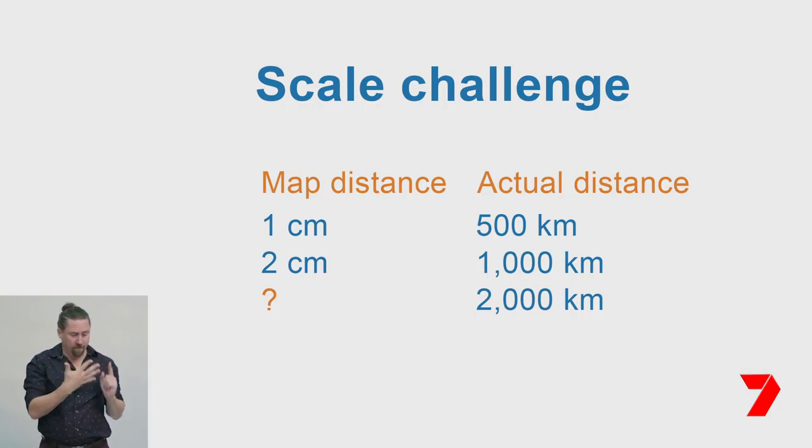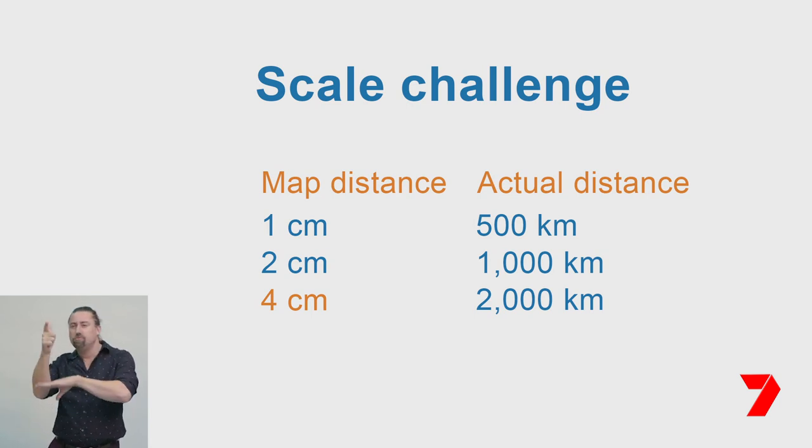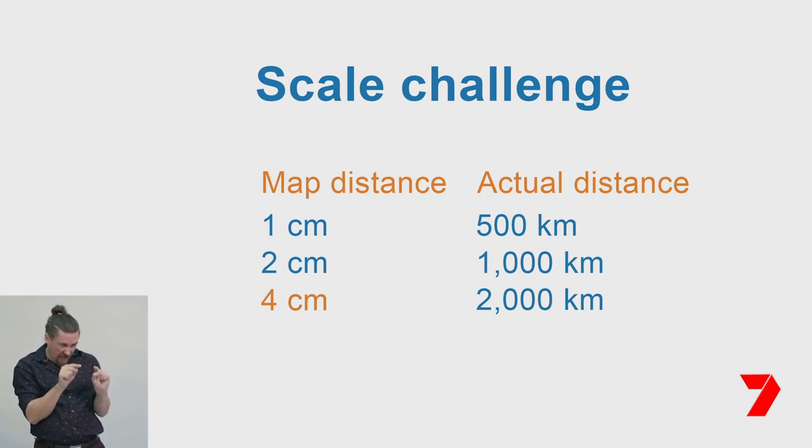Let's try using a different scale to practice our navigation skills. A map of Australia might use a scale like one centimetre equals 500 kilometres. Every one centimetre on the map is equal to 500 kilometres in actual distance. If we measure two centimetres on this map, it equals 1,000 kilometres in actual distance. Can you solve this challenge? If we travelled 2,000 kilometres of actual distance, how far would we move on the map? One centimetre equals 500 km, two centimetres equals 1,000 km — so four centimetres equals 2,000 kilometres.